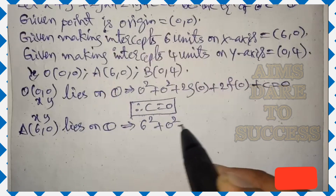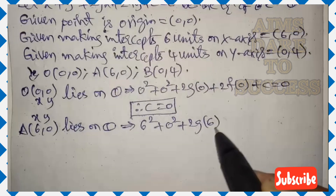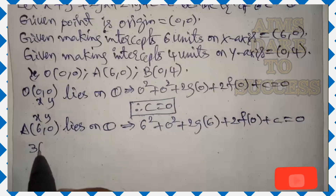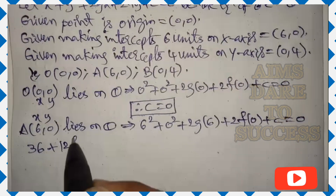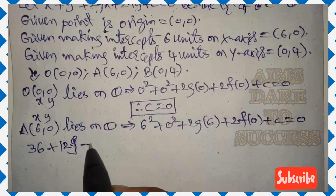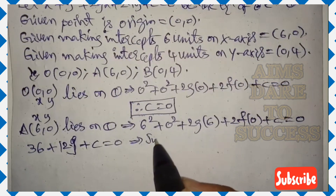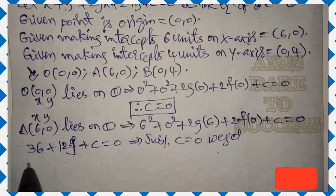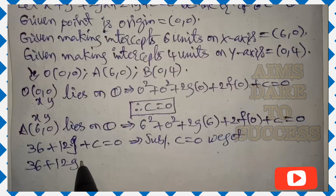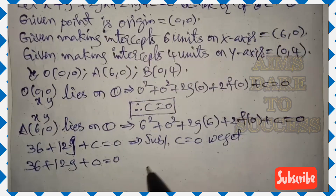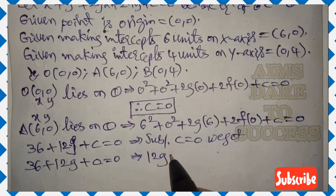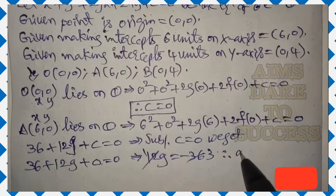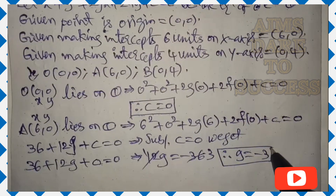Next, point (6, 0): x = 6, y = 0 lies on equation 1. Substituting: 6² + 0² + 2g(6) + 2f(0) + c = 0, which gives 36 + 12g + c = 0. Substituting c = 0, we get 36 + 12g = 0, so 12g = −36. Therefore g = −3.